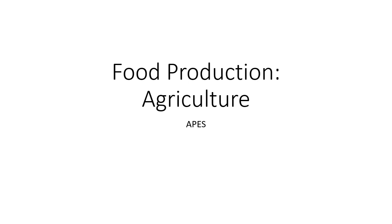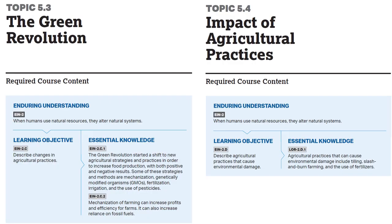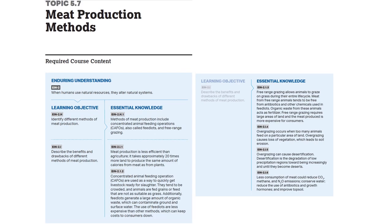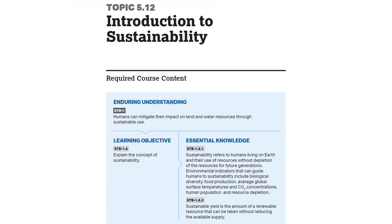Hi everyone, welcome to this lecture on agriculture for AP Environmental Science. This is going to be a long one because we're tackling many different learning objectives that all have to do with agriculture, so rather than splitting this into multiple presentations I'm going to do one that we'll cover over two class periods. We're going to look at topic 5.3 the green revolution, 5.4 impacts of agriculture, irrigation methods, production of meat, pest control, and we're going to interweave sustainable practices throughout this whole lecture.